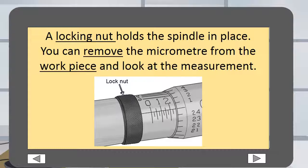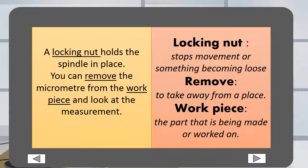A locking nut holds the spindle in place. You can remove the micrometer from the workpiece and look at the measurement. A locking nut stops movement or something becoming loose. Remove means to take away from a place. Workpiece is the part that is being made or worked on.